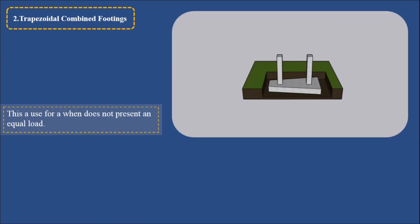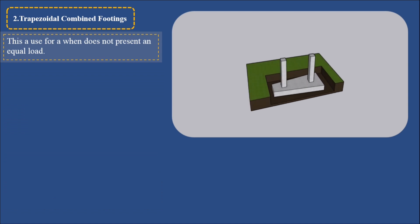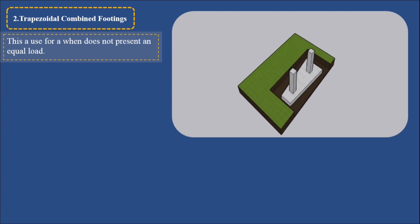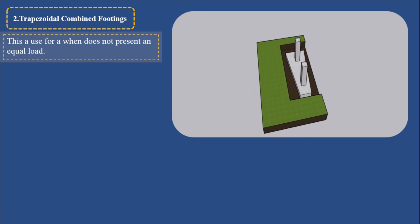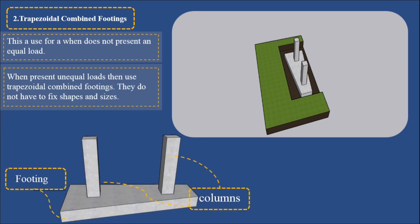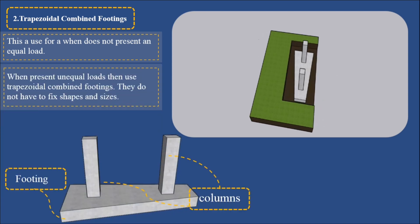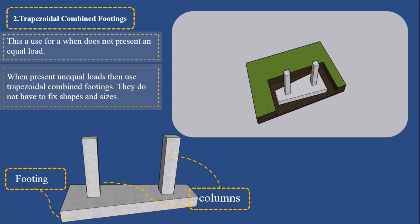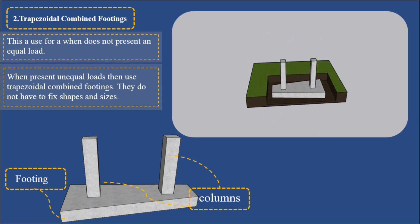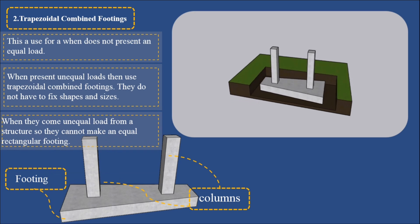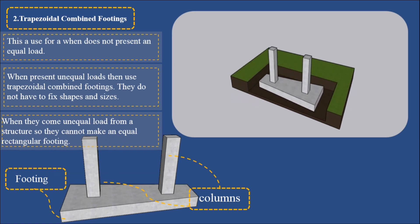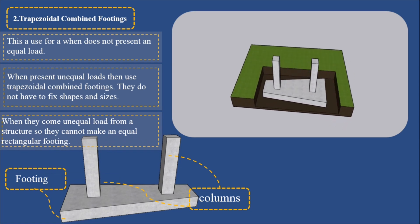2. Trapezoidal combined footings: This is used when columns do not present an equal load. When present unequal loads, then use trapezoidal combined footings. They do not have fixed shapes and sizes. When they carry unequal load from a structure, they cannot make an equal rectangular footing.